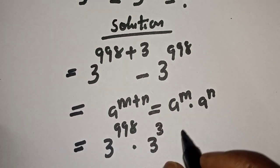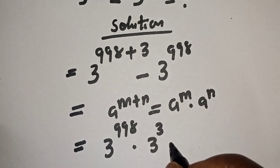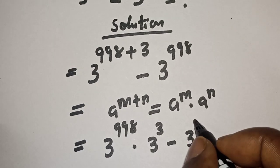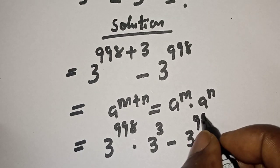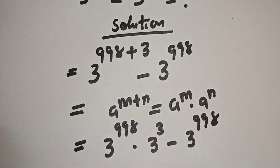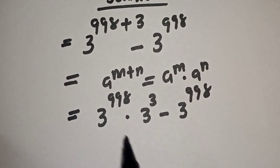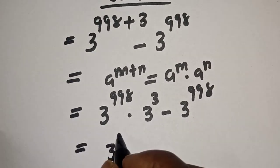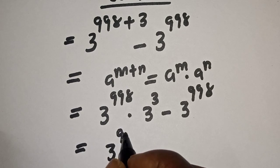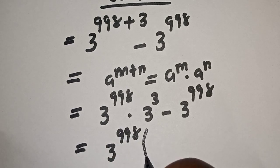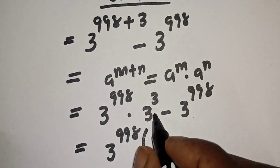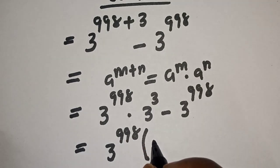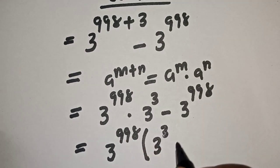Minus 3 raised to power 998. Then 3 raised to power 998 is common — let's bring it out. We have 3 to the power of 998 bracket, times 3 raised to power 3, minus 3 raised to power 998.